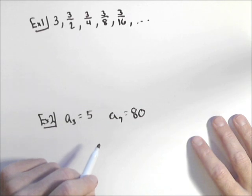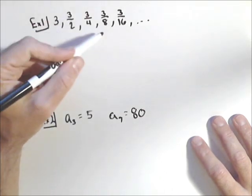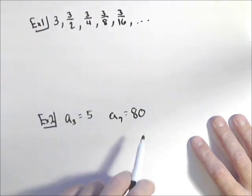In this video, we're going to look at two different ways of coming up with the general term of a geometric sequence. One given a list of numbers, and one just given two of the terms.